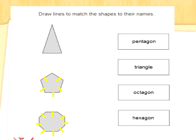Some questions will ask you to draw a line to match up a picture of a shape to their names. Now if you're very clever you will have spotted there are three shapes and four names. Sometimes you don't have to use all the names. That top shape is a three-sided shape — is that a pentagon, a triangle, an octagon or a hexagon? That's right, that is a triangle. A triangle has three sides.